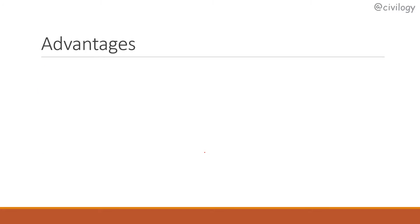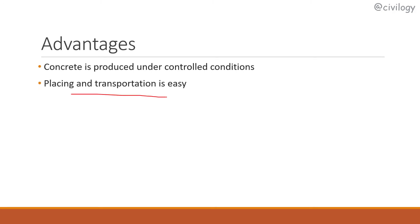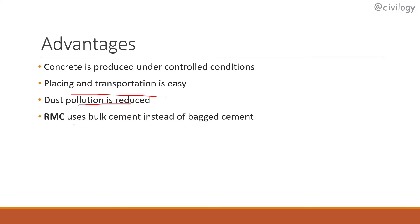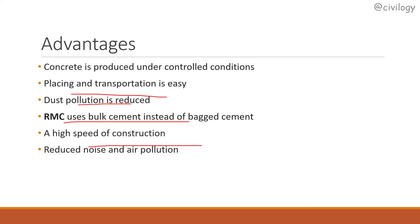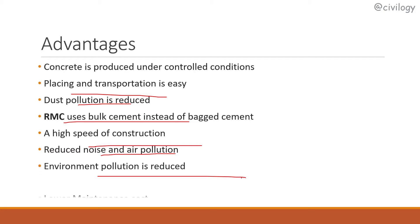What are the advantages of the RMC plant? Concrete is produced under controlled conditions. Placing and transportation is easy. Dust pollution is reduced. RMC uses bulk cement instead of bagged cement. High speed of construction is achieved, and noise, air, and environmental pollution are reduced. Lower maintenance cost is also an advantage.